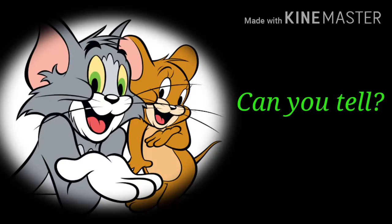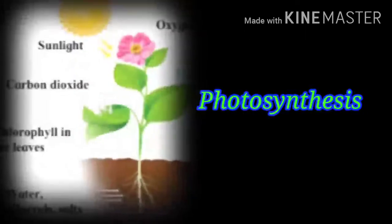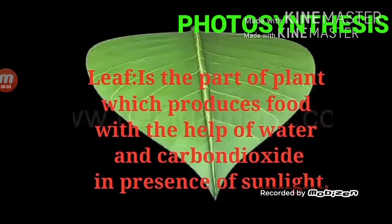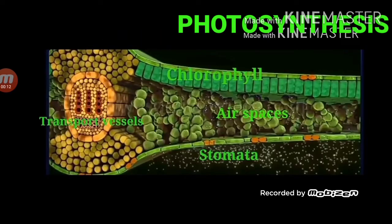Plants also need food for their growth. They can produce their own food with the help of sunlight and chlorophyll. Plants make their food in their leaves using water and nutrients from the soil and carbon dioxide from the air. This process is called photosynthesis. Leaves of plants produce food with the help of a green color pigment called chlorophyll. Due to the presence of these green pigments, the leaves of plants appear green in color.